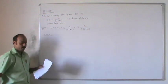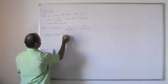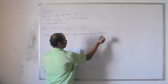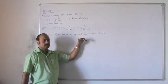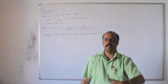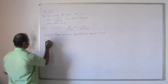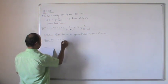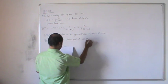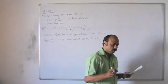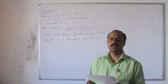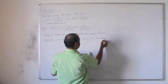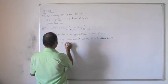Step 1: The root locus is symmetrical about the sigma axis. Step 2: Find the number of poles. For G(s) = k / [s(s + 2)], we have p = 2 poles located at s = 0 and s = -2, where k = 0. The number of zeros z = 0.